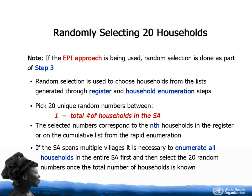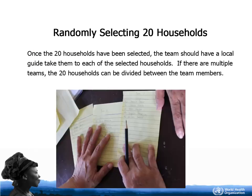If the register contains a list of individuals, it is possible to select one person directly from the register.